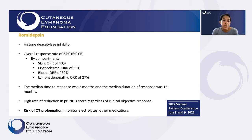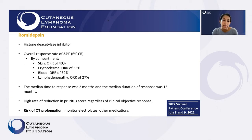One notable fact about romidepsin is that regardless of the clinical objective response — regardless of how we measure disease by looking at the skin or measuring it in the blood — patients did seem to feel better and have a reduction in itchiness. One of the side effects is that the medication can affect the heart and the heart rhythm, causing something called QT prolongation. So when patients are on this treatment, we monitor their electrolytes — potassium and magnesium — we'll monitor EKGs, and we'll keep an eye on other medications that patients are taking which may also affect the QT interval.